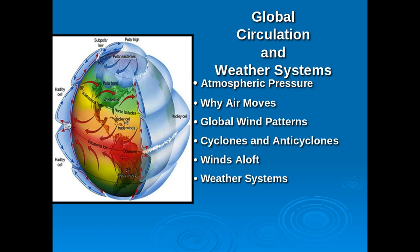Welcome to part one of global circulation and weather systems. We're primarily going to focus on global winds in this discussion. We're going to look at atmospheric pressure and how that influences the way air moves. We'll look at some major global wind patterns responsible for common weather patterns across the United States. We'll define and look at cyclones and anticyclones. We'll take a look at a particular type of wind in the upper atmosphere, up in the upper parts of the stratosphere. We'll look at some weather systems.